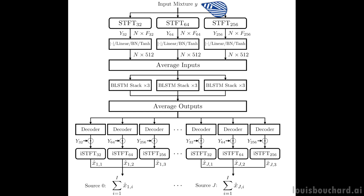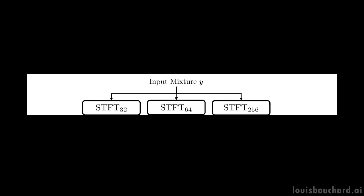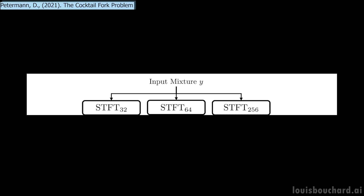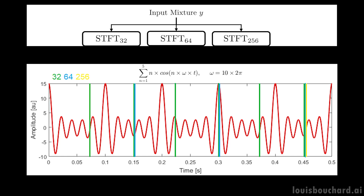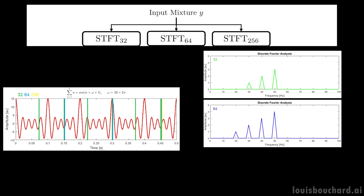The model receives a movie soundtrack and transforms it into three independent soundtracks. The input mixture Y is the complete soundtrack, and the three output sources X are speech, music, and sound effects separated. The first step is to encode the soundtrack using a Fourier transform on different resolutions called STFT, or Short-Time Fourier Transform. The input soundtrack is first split into shorter segments — either 32, 64, or 256 millisecond windows — then we compute the Fourier transform on each of these shorter segments.